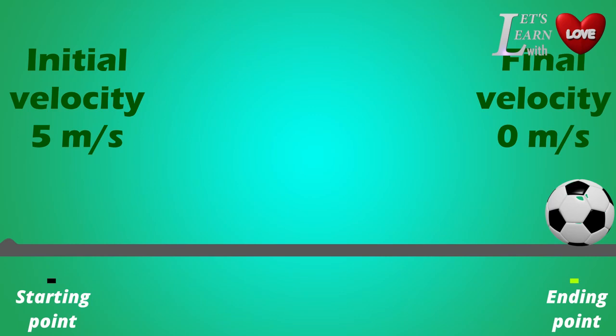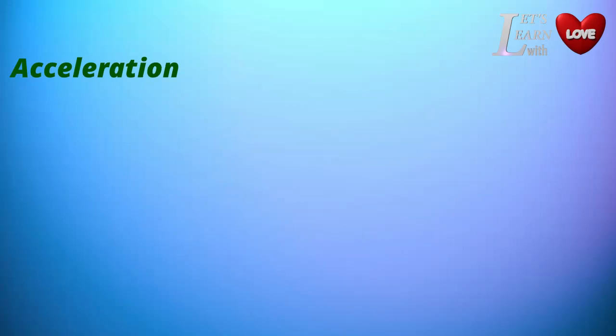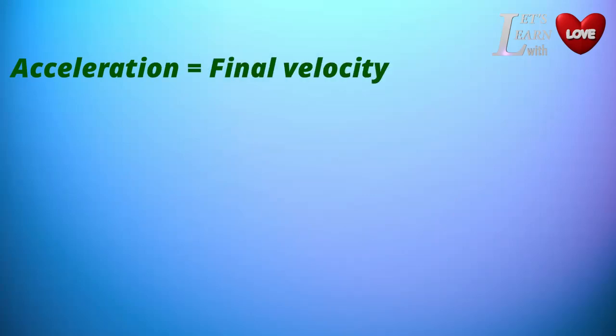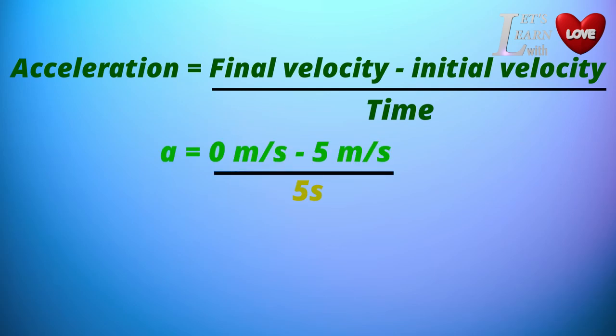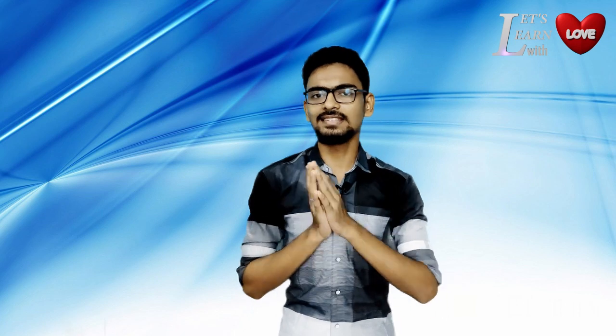Now we calculate: final velocity is 0 meters per second, initial velocity is 5 meters per second. So, 0 minus 5 divided by time of 5 seconds equals minus 5 divided by 5, which equals minus 1 meter per second squared. That means negative acceleration — deceleration — the object is slowing down.